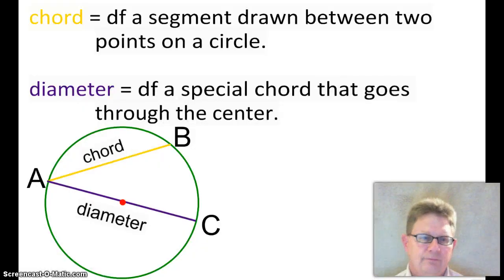Moving right along. A chord is a segment drawn between two points on a circle. AB is a chord. AC is also a chord, but it's a special chord because it goes through the center. When a chord goes through the center, it's called the diameter.